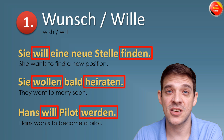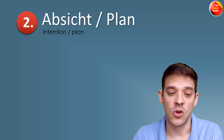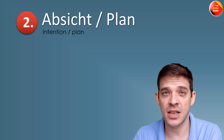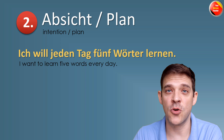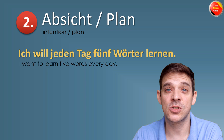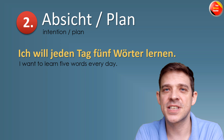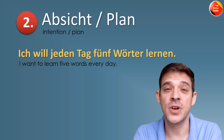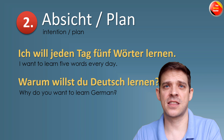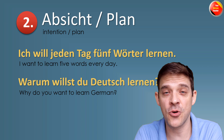Number 2 is Absicht — die Absicht oder der Plan — intention or plan. Zum Beispiel: Ich will jeden Tag fünf Wörter lernen — I want to learn five words every day. Five words every day is a good number to improve your vocabulary. Oder: Warum willst du Deutsch lernen? — Why do you want to learn German? This is probably a question you've heard once you started learning German.